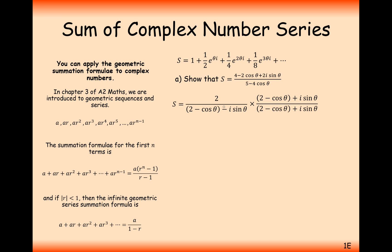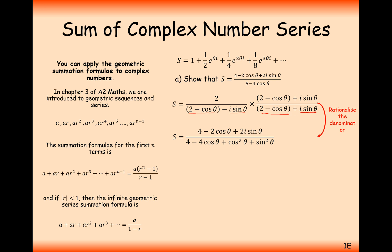We multiply top and bottom by the complex conjugate of the denominator — that's the real part with the sign between real and imaginary changed to a plus. Expanding the brackets and rationalizing the denominator: the numerator gives 4 minus 2cos θ plus 2i sin θ. The denominator gives 4 minus 4cos θ plus cos²θ, and the i sin θ terms cancel except for minus i² sin²θ, which equals sin²θ. Grouping sin²θ + cos²θ = 1 completes the proof that S equals the required trigonometric expression.